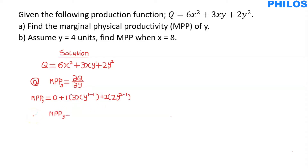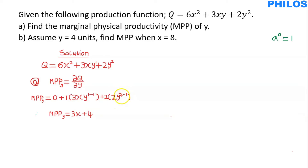So MPP of y will be equal to — since the first term is 0, we drop it. For the second term, 1 minus 1 is 0, and y to the exponent 0 is 1, because any term to the power 0 equals 1. So 1 times 3x times 1 gives us 3x. Plus, for the last term, 2 times 2 gives 4, and 2 minus 1 at the exponent is 1, so y to the 1 is just y, giving 4y. Therefore MPP of y equals 3x plus 4y.